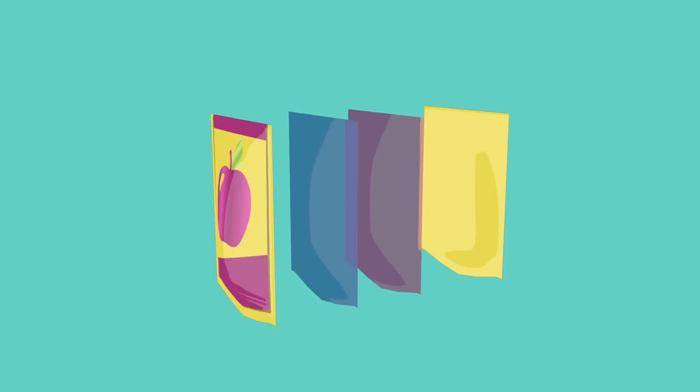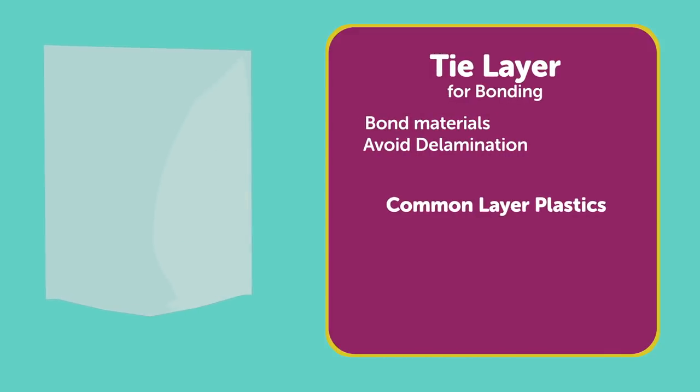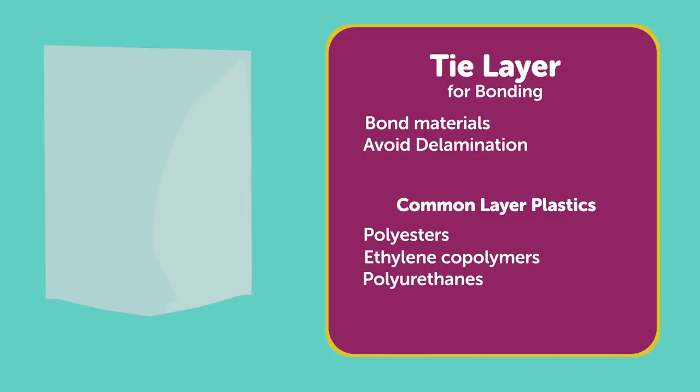When materials can't be adhered by heat, a fourth layer may be needed. This is called the tie layer. Tie layers help to bond the materials and avoid delamination. Possible materials for tie layers include polyesters, ethylene copolymers, polyurethanes, acrylic, or regrind to reduce cost and build more binding capacity.